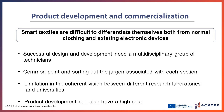Successful design and development require a multidisciplinary group of technicians made of textile scientists, polymer chemists, physicists, bioengineers, software engineers, consumer specialists, and fashion designers. Finding a common point and sorting out the jargon associated with each field can be challenging. Moreover, there is a limitation in the coherent vision for smart textile development between different research laboratories and universities. Product development can also involve high cost and often fruitless effort.